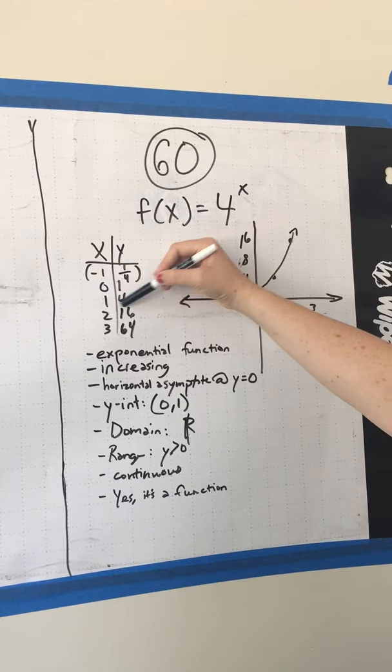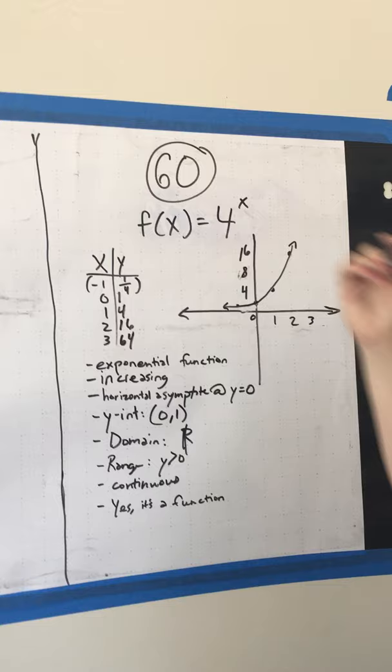And also whenever you use a negative number, it's going to be a fraction. Which is also why there's an asymptote at y equals 0, because it can never be negative.